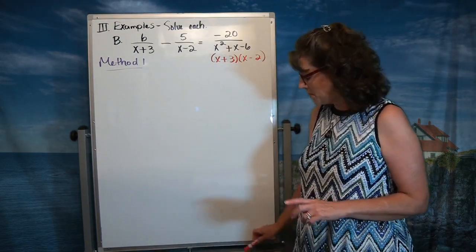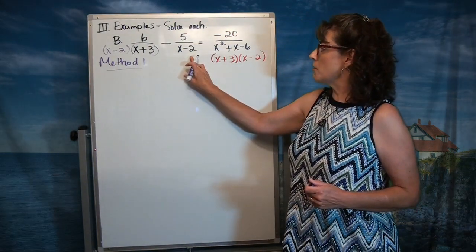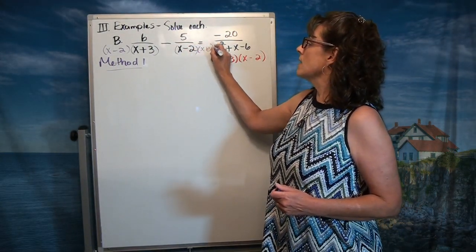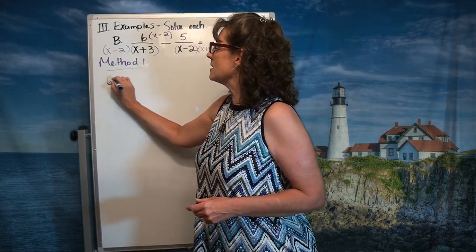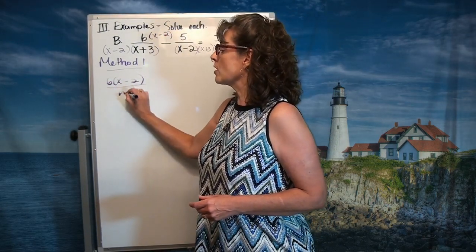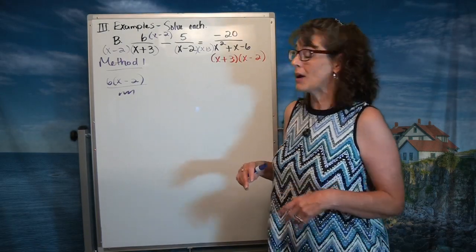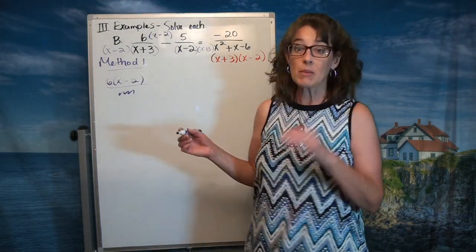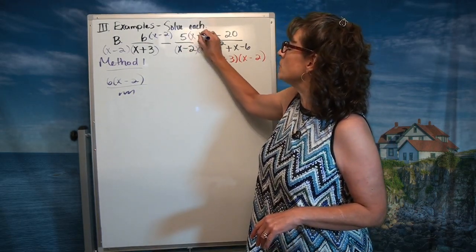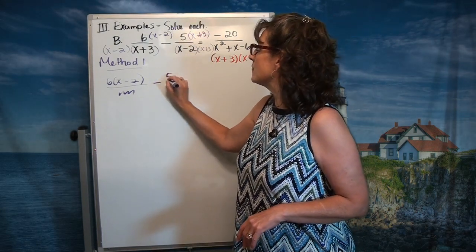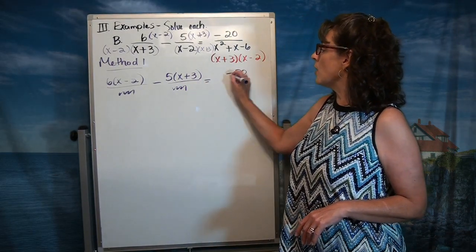A real good rule of thumb: take a look at each of these denominators — chances are about 99% of the time, that's how this thing is going to factor. So this is how it factors. As I look at that, the middle denominator, to make them all look the same, needs an x minus 2. And the last denominator needs an x plus 3. If I'm going to multiply the first denominator by x minus 2, I better multiply the numerator by x minus 2 — giving me 6 times (x minus 2) over the common denominator. And I'm going to multiply the second numerator by x plus 3, giving me minus 5 times (x plus 3) over common denominator. And I have negative 20 over common denominator.